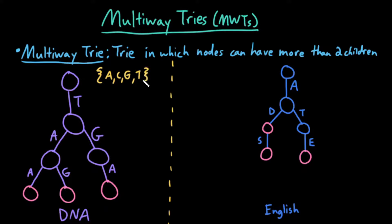And let's take a look at what words are represented in this multi-way trie. I can follow every path from the root to a word node, and that spells out a word. So T, A, A is a word.